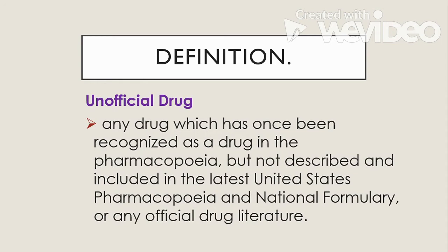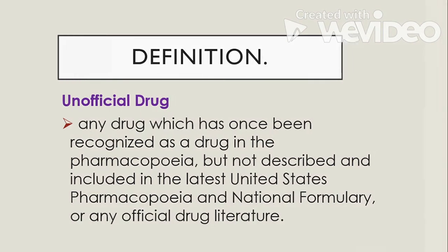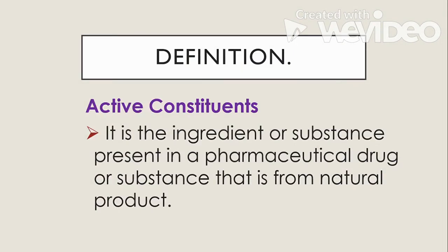An unofficial drug, on the other hand, is any drug which has once been recognized in the pharmacopeia but is no longer described and included in the latest United States Pharmacopeia and National Formulary or any official drug literature.